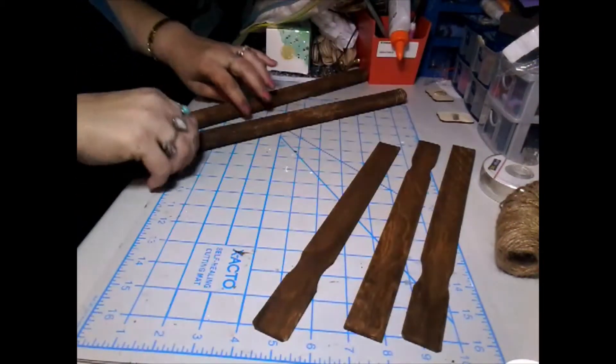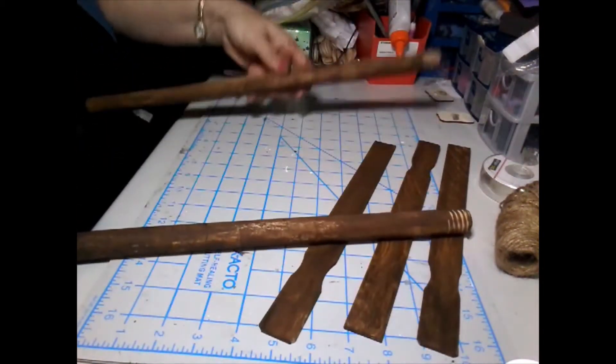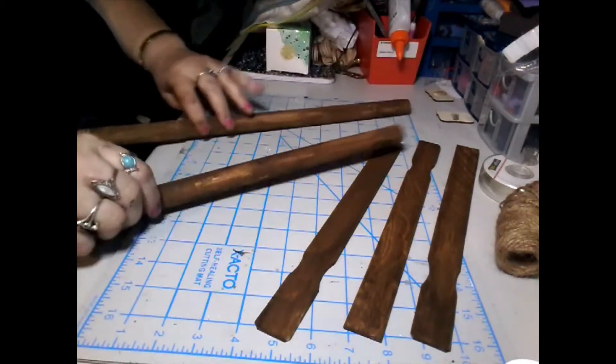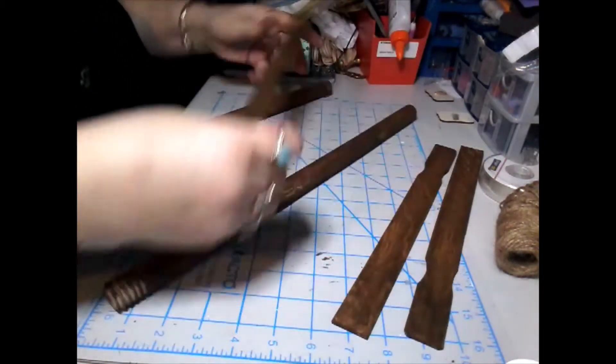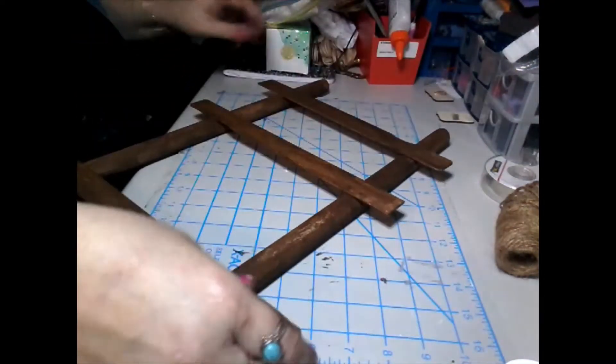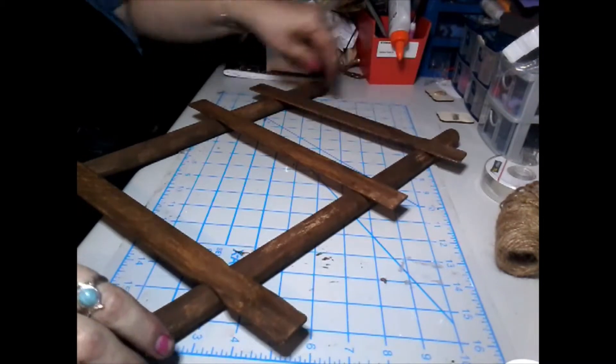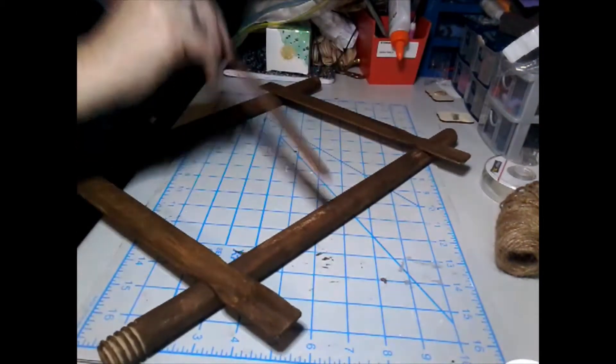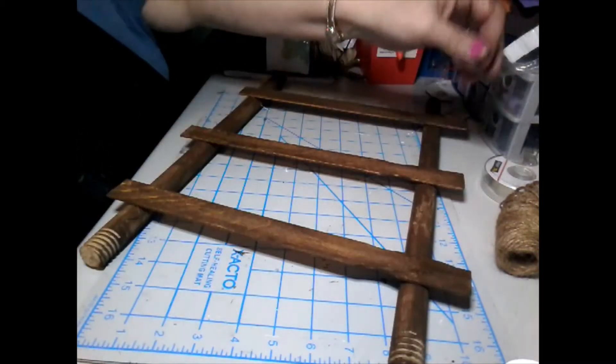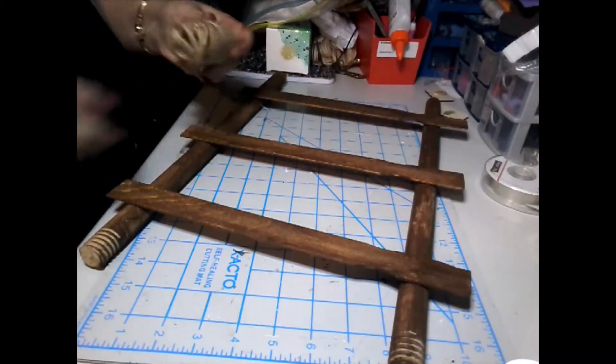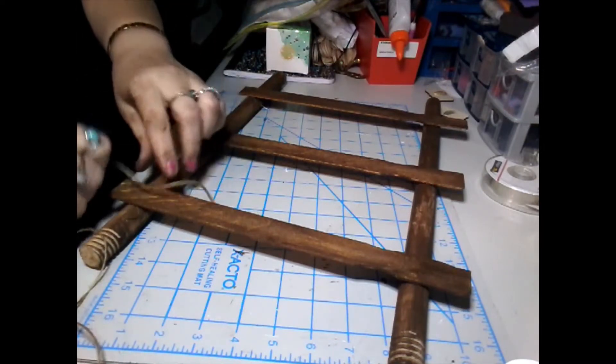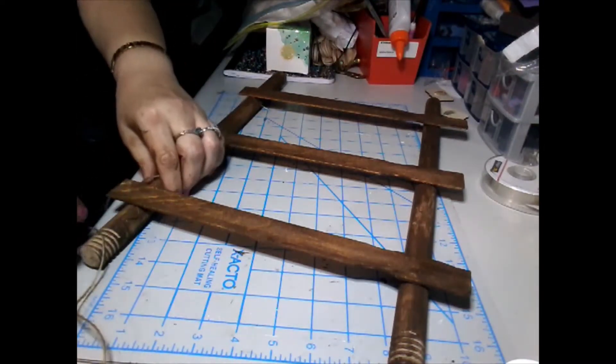Once we get them painted, we're going to start arranging this to make it look kind of like a little ladder. You can hang little decorative towels on it. We're going to temporarily put it together a little bit with some hot glue, just a little bit to hold it while we're adding some jute.